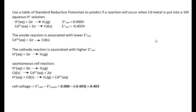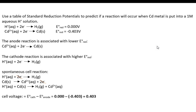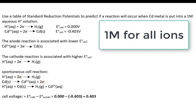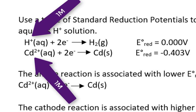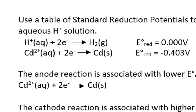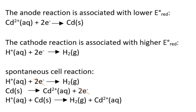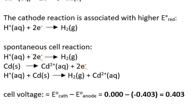Here is another application of standard reduction potentials — we're asked to predict if a reaction will occur when cadmium metal is placed into a one-molar aqueous hydrogen ion solution. One molar implies standard conditions, so these are standard cell potentials. The standard reduction potential for hydrogen is zero, and for cadmium it is negative 0.403 volts. Therefore, cadmium is associated with oxidation at the anode, and hydrogen reduction occurs at the cathode. Combining these two half-cells gives the overall cell reaction: cadmium will spontaneously react with hydrogen ion to form cadmium ion, with a cell voltage of positive 0.403 volts.